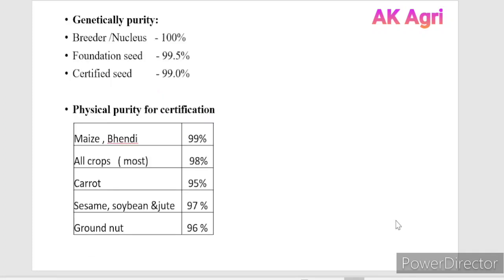Let us discuss genetic purity in different classes of seed. For nuclear seed and breeder seed, genetic purity is 100%. For foundation seed, it is 99.5%, and for certified seed, it is 99%. Regarding physical purity for certification, in most crops it is 98%, but exceptions include maize and okra (bhindi) at 99%, and carrot at 95%.